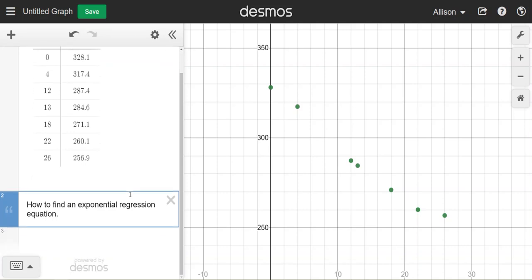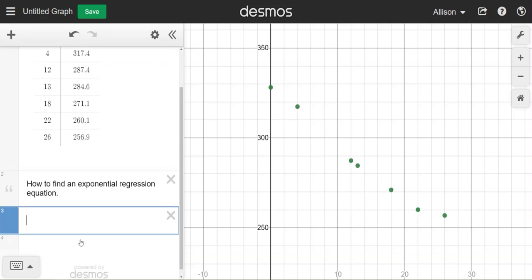So to begin with exponential regression, we need to know what an exponential equation looks like. So y or f of x equals a times b to the x. We're going to focus on the y equals ab to the x part so that we can do our regression.